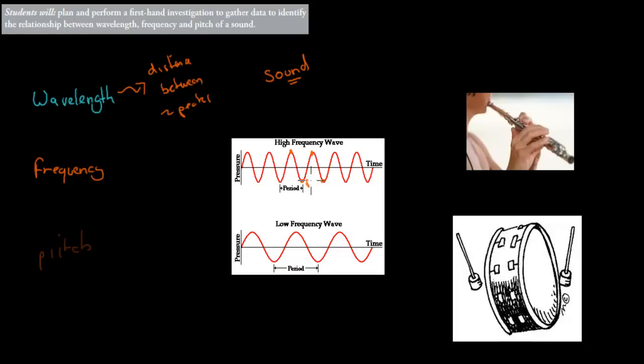The frequency is just how many wavelengths there are per second — so waves per second. Waves per second is your frequency, and they are measured in Hertz, so if you see Hertz, that's frequency. For example, this would have a higher frequency than the bottom, which would be a lower frequency.